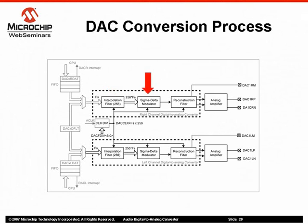Next, the output of the interpolation filter drives the sigma-delta modulator, which converts the word output from the interpolation filter into a serial bit stream. And lastly, that bit stream from the modulator is processed by the reconstruction filter to convert the bit stream to an analog signal. It then performs a low-pass filter to yield the desired voltage levels.